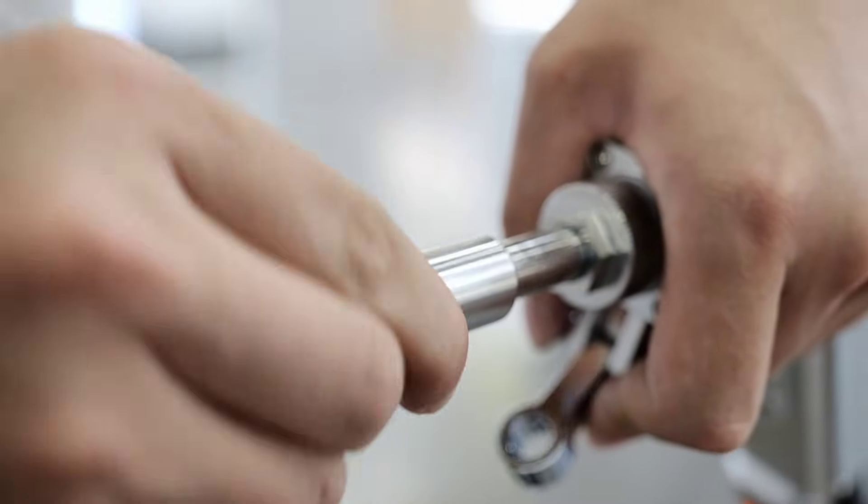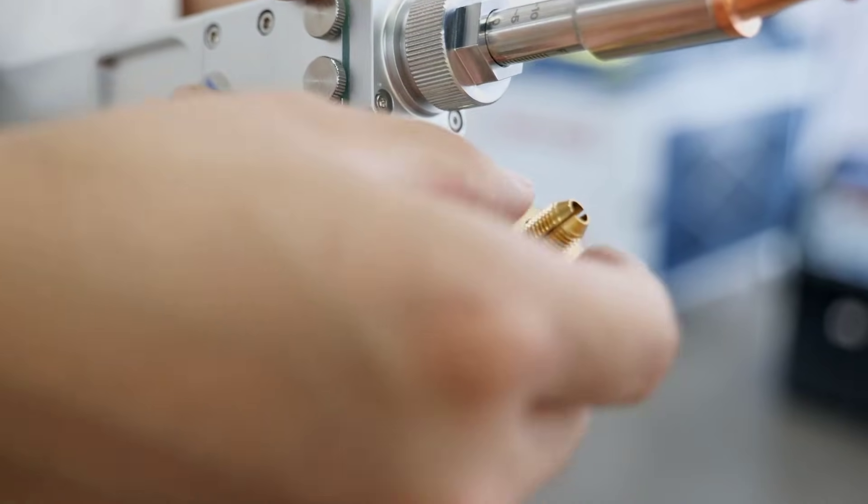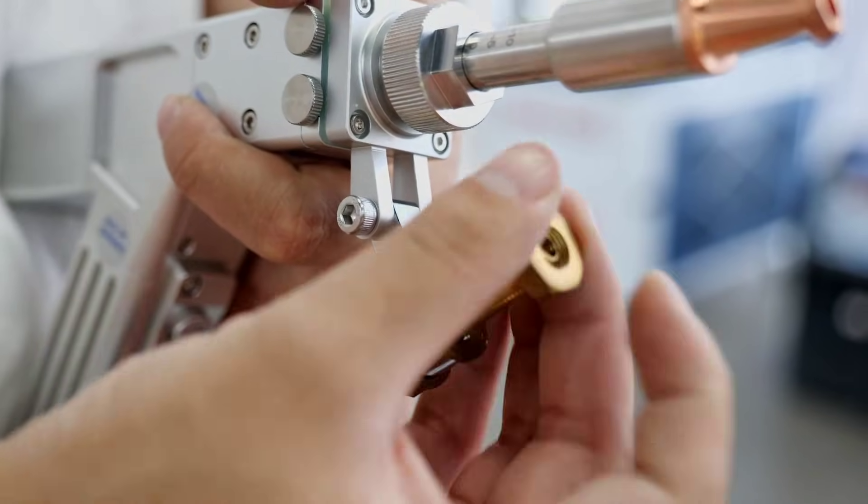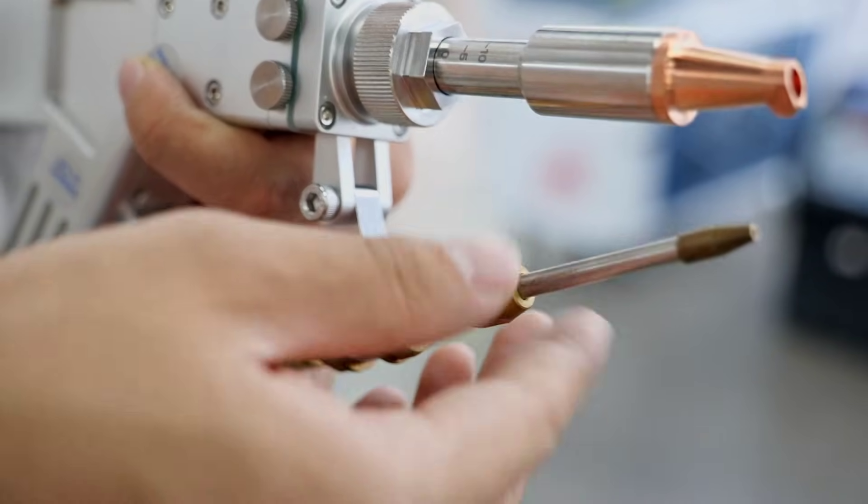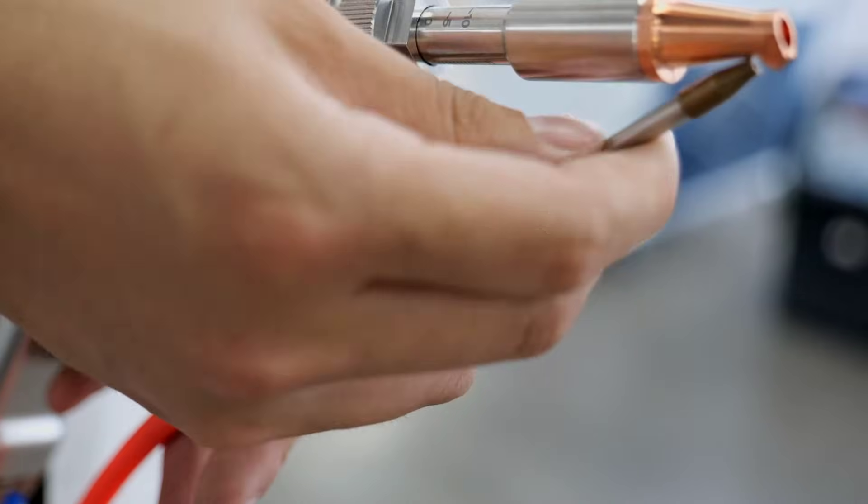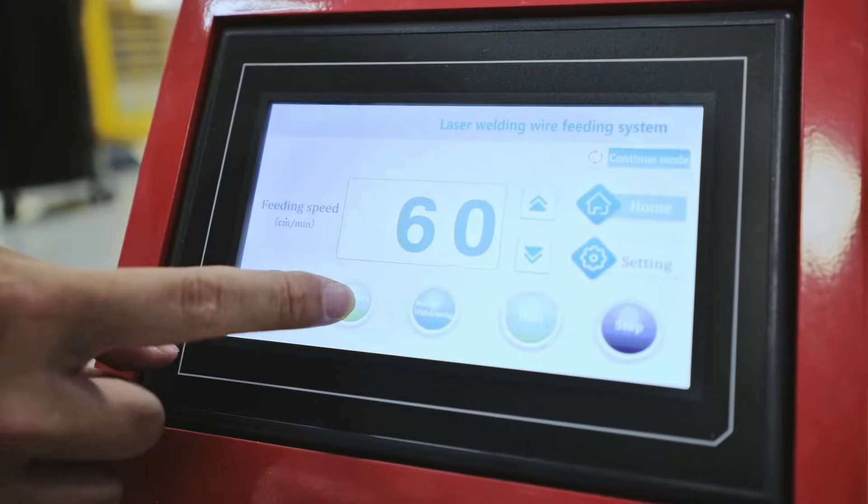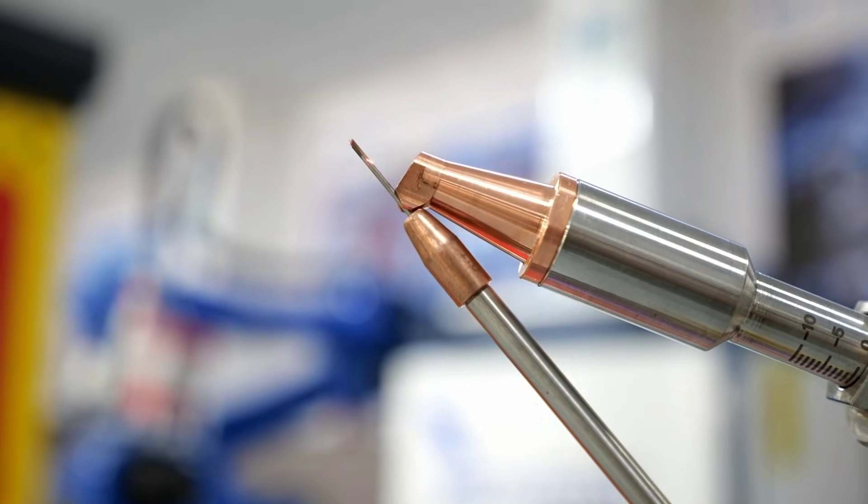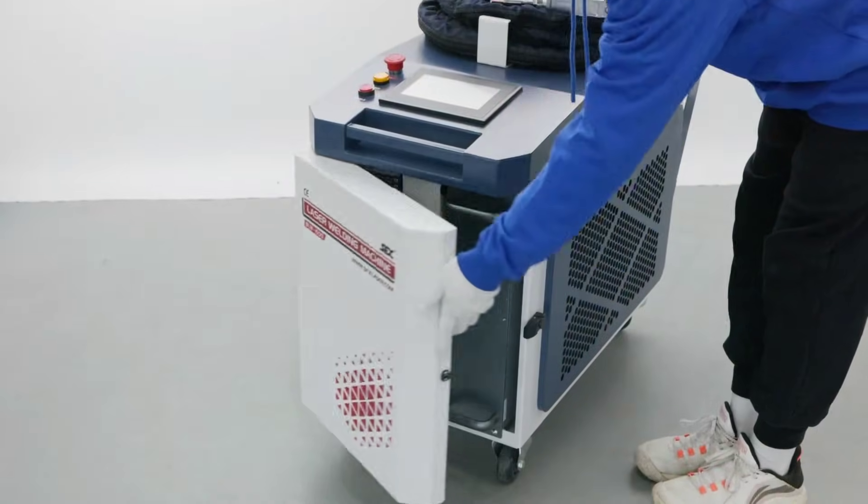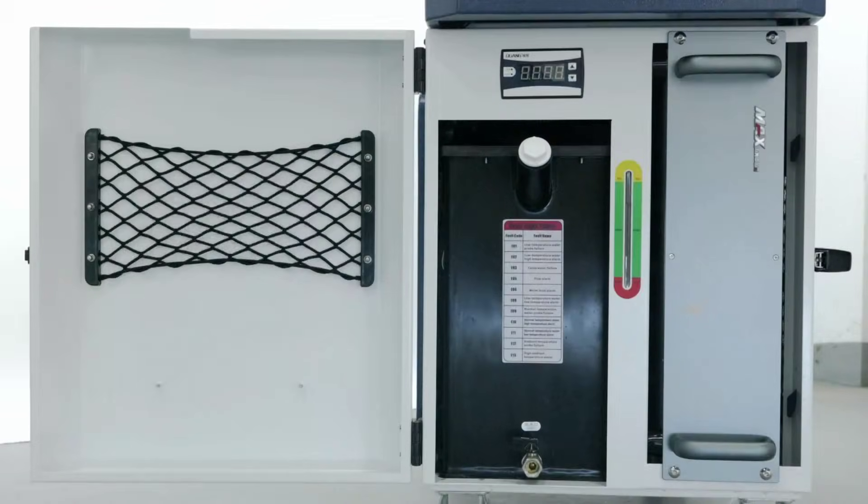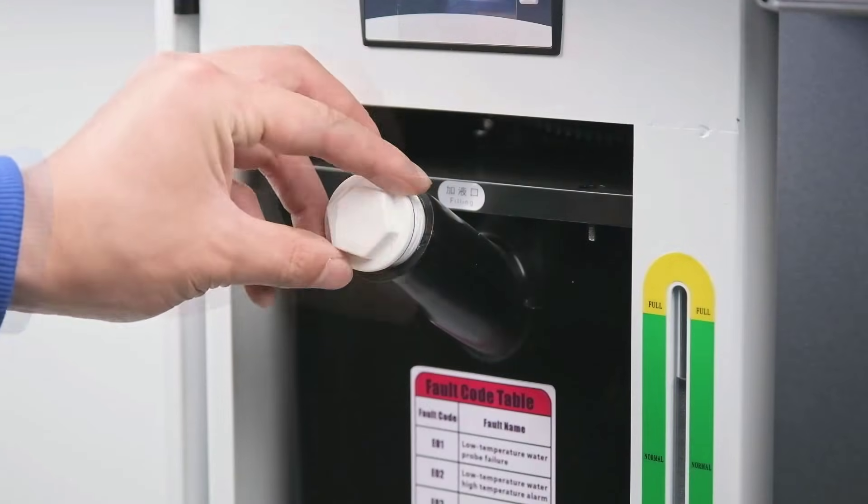Whether you're fabricating industrial components or repairing automotive parts, this machine offers professional-grade results. Its ergonomic handheld design enhances mobility, making it easier to weld in hard-to-reach areas or complex angles. The welding gun delivers smooth and precise welds, minimizing spatter and cleanup.